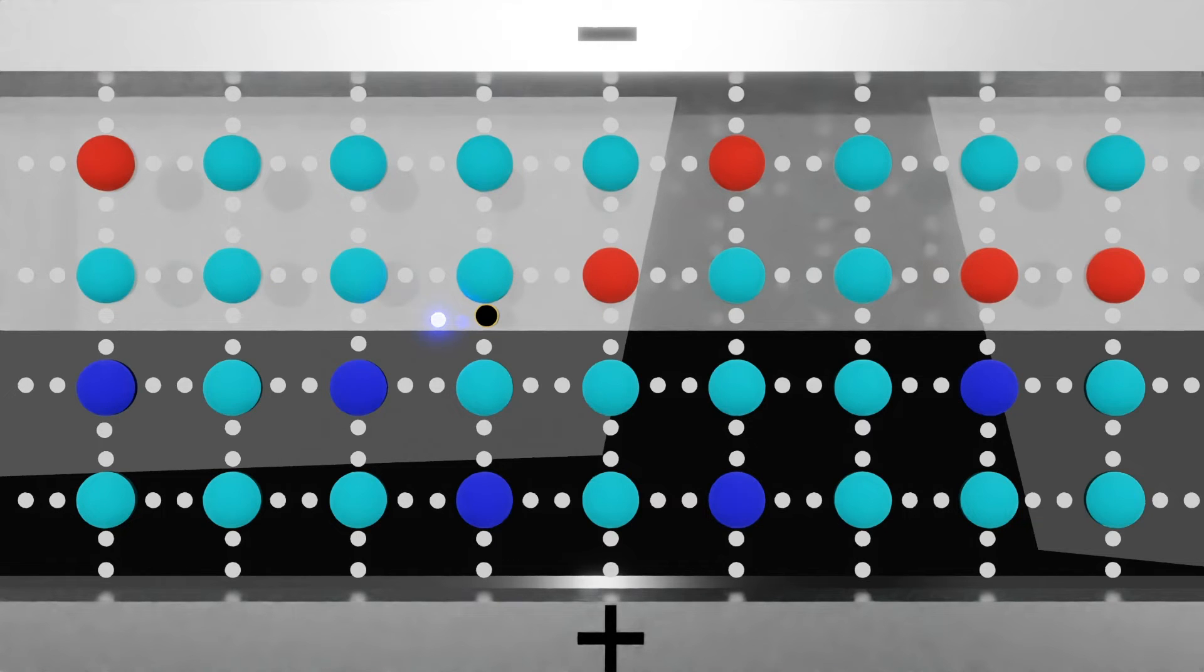The negatively charged electron and the location of the positively charged hole are now free to move around. However, the structure of the solar cell is designed to create an internal electric field within the semiconductor material. This electric field acts as a gradient that pushes the free electrons toward one direction and the holes toward the opposite direction.